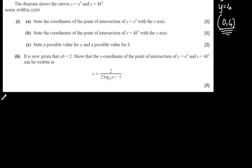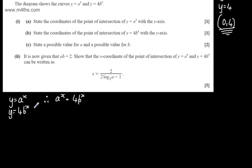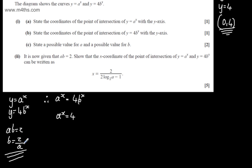So we've got y equals a to the x and y equals 4b to the x. Therefore a to the x equals 4b to the x. Since ab equals 2, we can write b equals 2 over a. Substituting this in, we get a to the x equals 4 lots of b to the x, which I can write as (2 over a) to the x, or equivalently 2 to the x over a to the x.